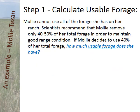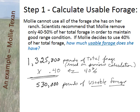So how much forage is usable on Molly's ranch? Scientists recommend that in the southern mixed plains, Molly could use 40 to 50% of her forage every year and the land would still be maintained in good condition. Molly has decided to be conservative and use 40%. So: 1,325,000 pounds times 0.4 equals 530,000 pounds of usable forage — the amount of dry forage she can use to set her stocking rate.